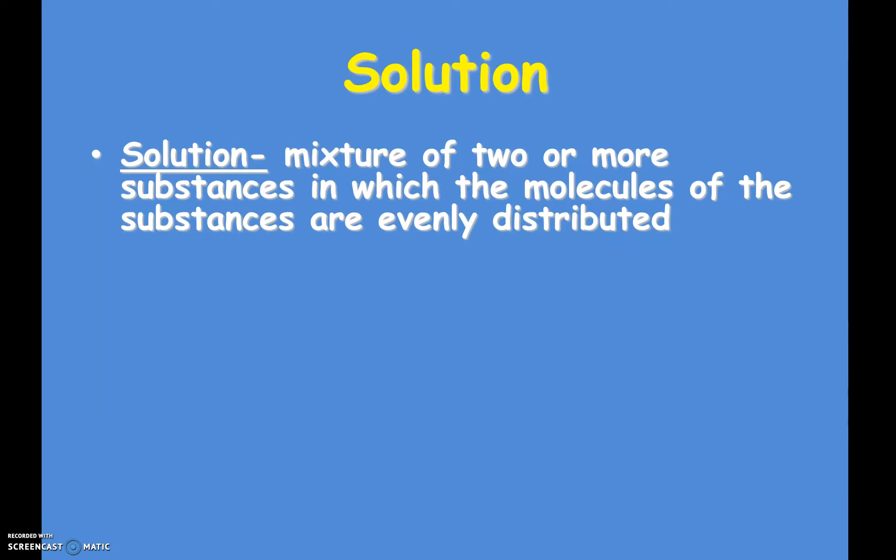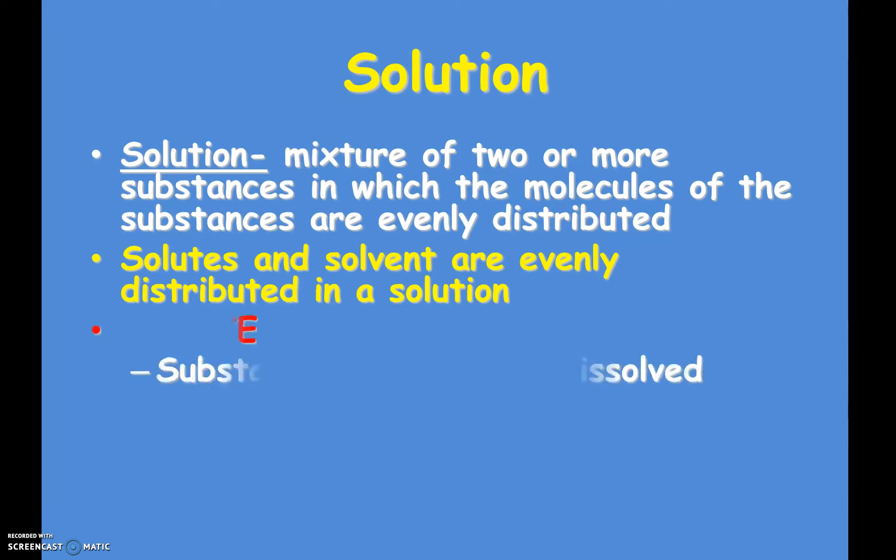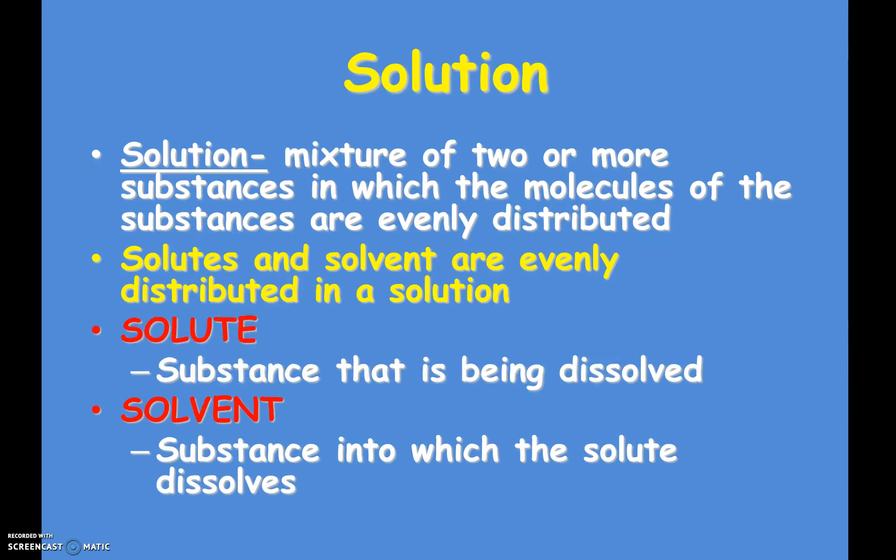There are a couple of vocab words that go along with this. There are solutes and there's a solvent. The solvent in our case would be water. That's the substance that is doing the dissolving. The solutes are the substances that are being dissolved. So if we want to make salt water, we put salt into water and stir it. Salt would be the solutes and water would be the solvent.